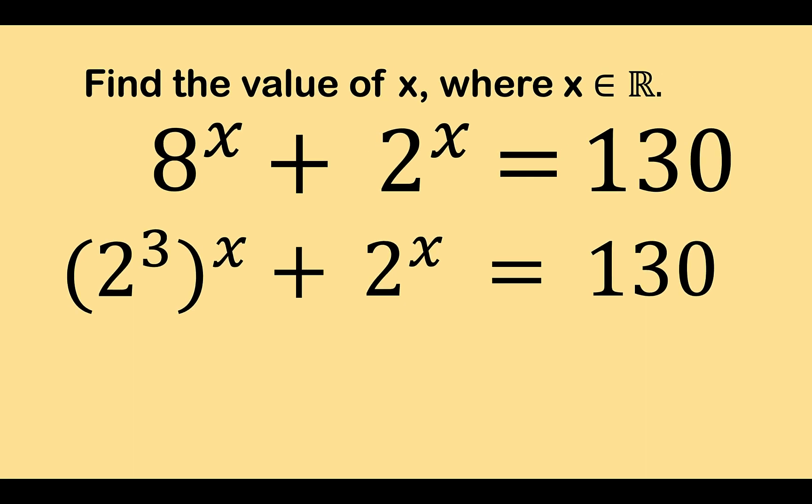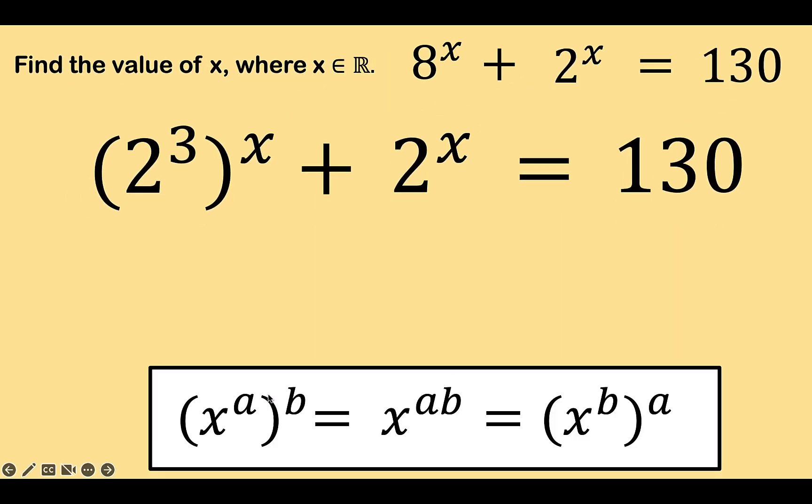Next, let's recall some properties of exponent. If we have x raised to a, all raised to b, we can apply the power rule of exponent to write it as x raised to the product of the two exponents. But since multiplication is commutative, we can also rewrite this back as x raised to b, all raised to a. We are going to apply this in order to interchange this exponent 3 and this exponent x to have this form.